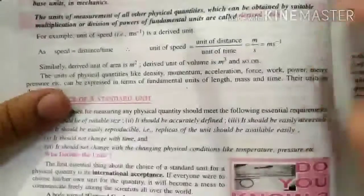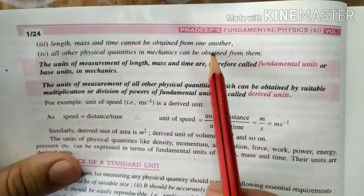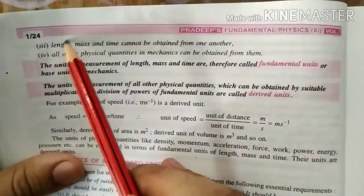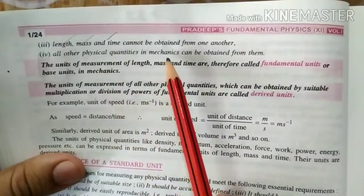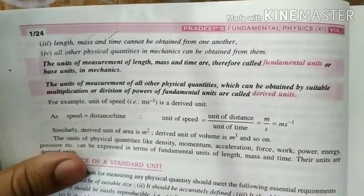Each one is different. Length, mass and time cannot be obtained from each other. All other physical quantities in mechanics can be obtained from them.